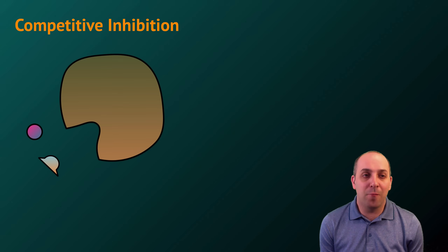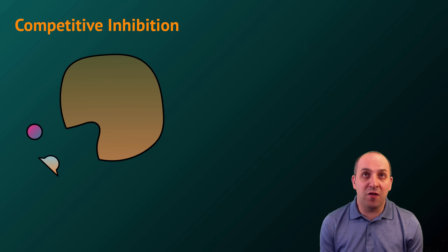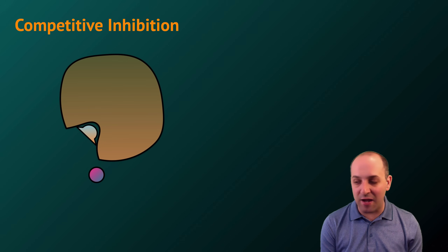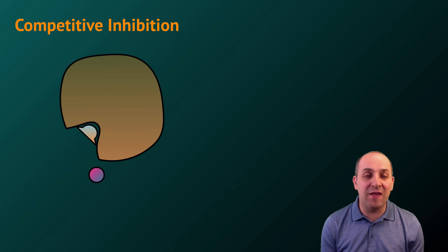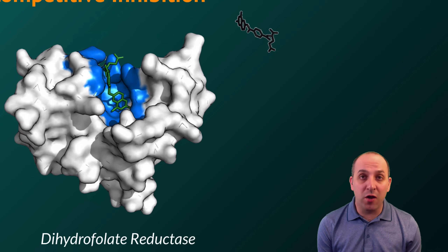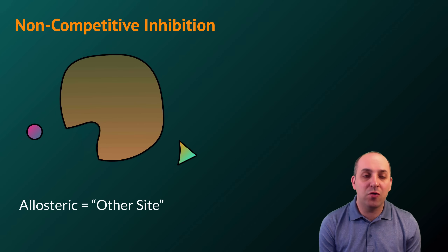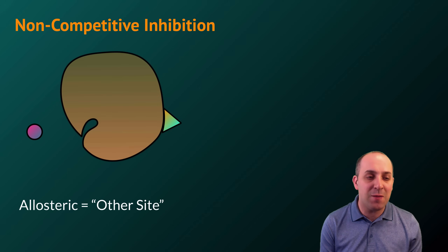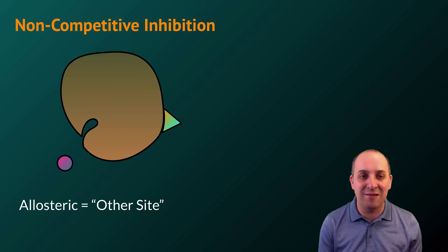Enzyme activity can also be affected by the presence of molecules that inhibit enzymes from catalyzing reactions. There are two major types of inhibitors. In competitive inhibition, a molecule that mimics the shape of the substrate occupies the active site and prevents the actual substrate from entering. We can see this where a green molecule serves as a competitive inhibitor for the enzyme dihydrofolate reductase — that green molecule is actually a candidate drug being used to prevent the heightened activity of dihydrofolate reductase seen in several types of cancers. In non-competitive inhibition, the inhibitor binds to a region away from the active site but changes the shape of the active site so that the substrate cannot bind and catalysis cannot occur.